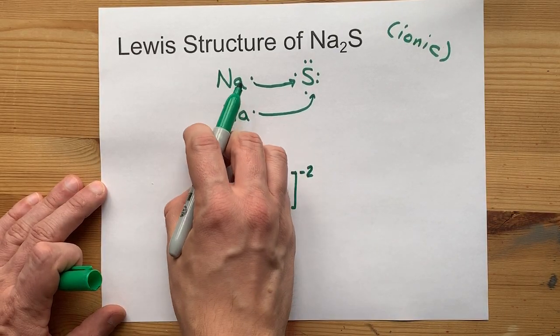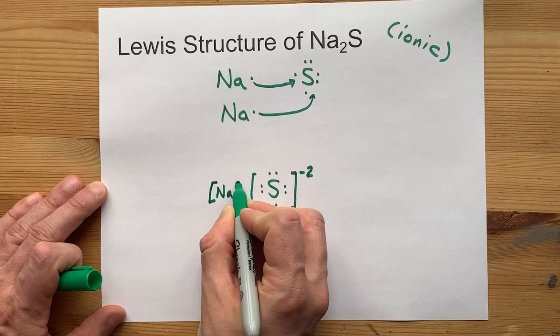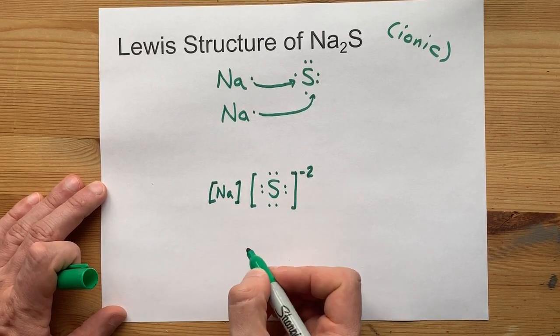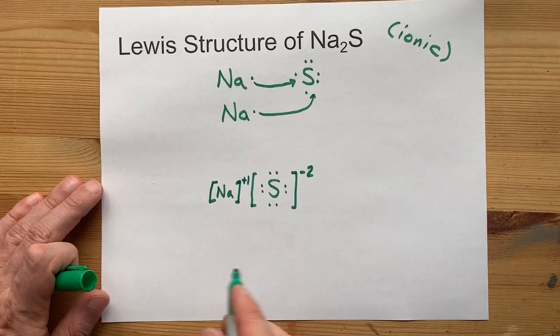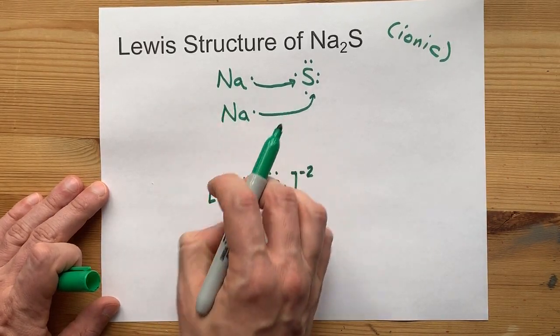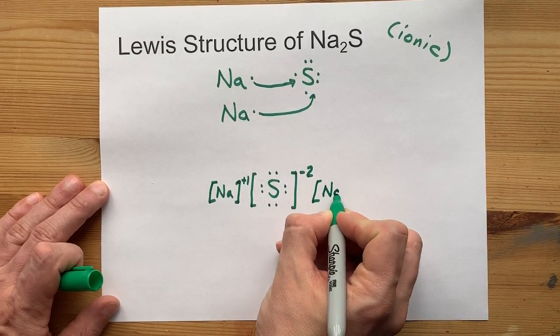Great. The sodiums brought one electron with it, but now have none. So don't put any dots with it now, but give it a plus one charge because it gave that electron away. Now, you need to show the other sodium because,